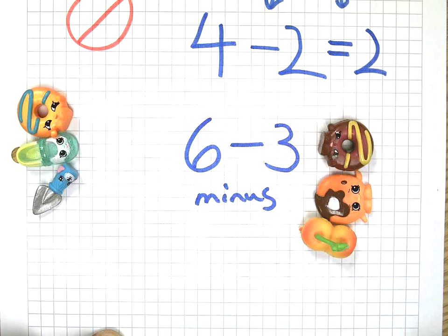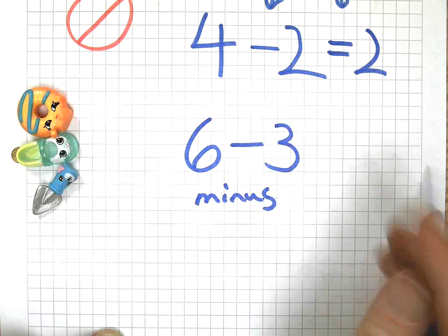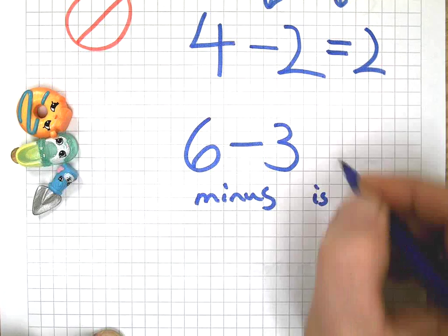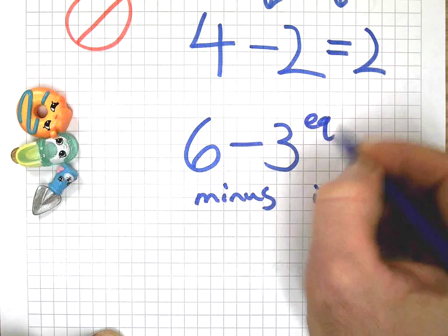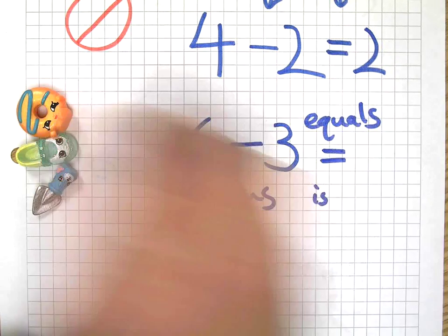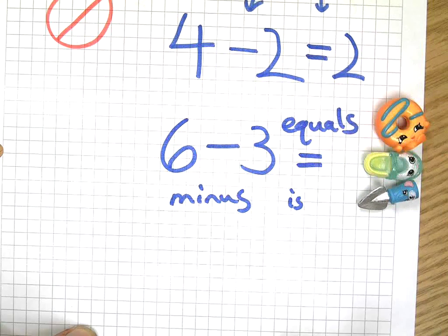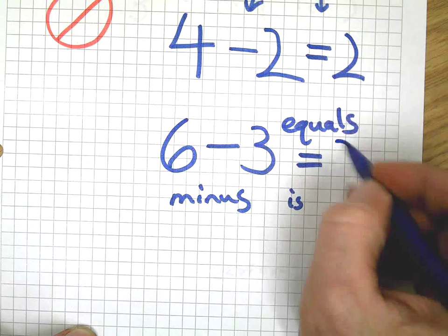They're over here if you forgot - three. Six minus three is... I'm thinking of the word 'is,' but what am I writing? Equals. These guys and girls - three.